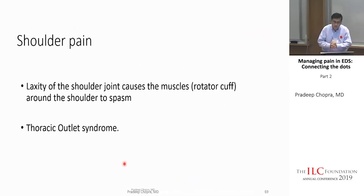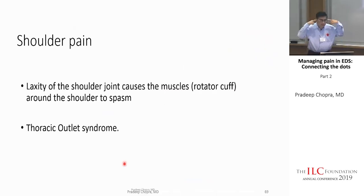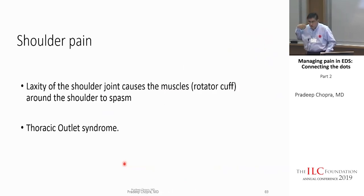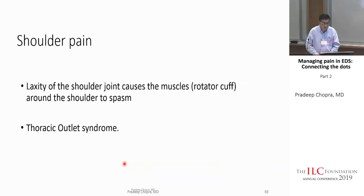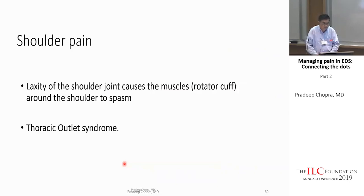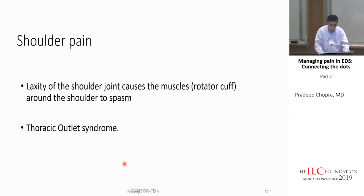Moving on to arm pain in EDS. Reasons for shoulder pain include laxity of the shoulder joint — the shoulder subluxes easily, and the rotator cuff muscles tighten trying to pull the joint back in. The other cause is thoracic outlet syndrome.